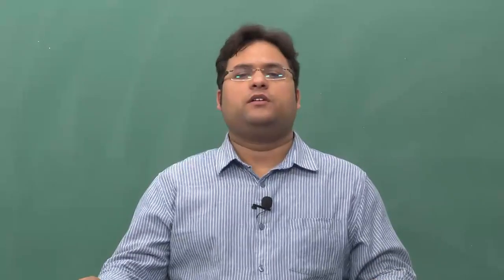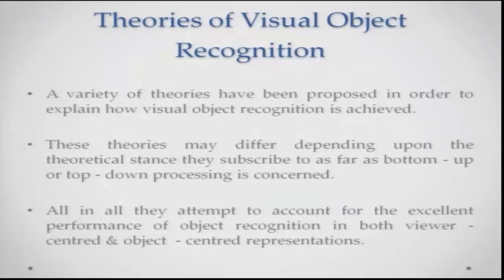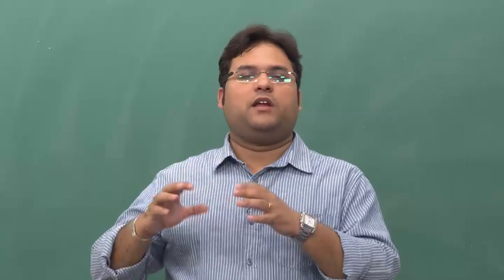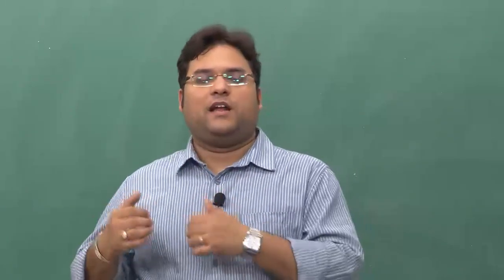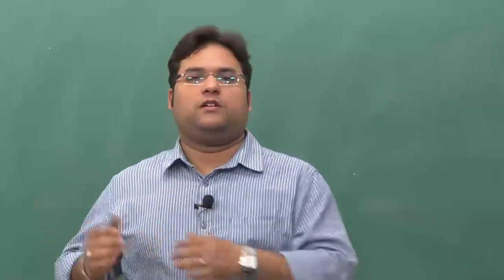There have been a variety of theories proposed to explain how visual recognition is achieved. These theories may differ depending upon the theoretical stance they take — whether they are bottom-up theories or top-down theories. Bottom-up theories focus on using information from sensory experience to develop mental representations, while top-down theories favor the stance that memory, experience, and knowledge of the world help us build mental representations.